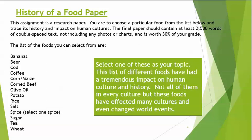Finally, you'll have to write a history of a particular food paper. This assignment is a research paper — you are to choose a particular food from the list and trace its history and impact on human cultures. The final paper should contain at least 2,500 words of double-spaced text, not including any photos or charts, and this is worth 30% of your grade. These different foods have had a tremendous impact on human culture and history — they have affected many cultures and even changed world events.